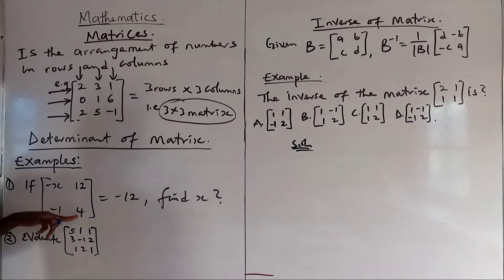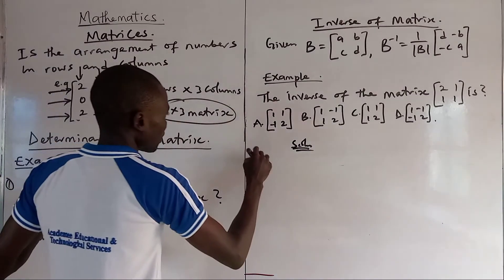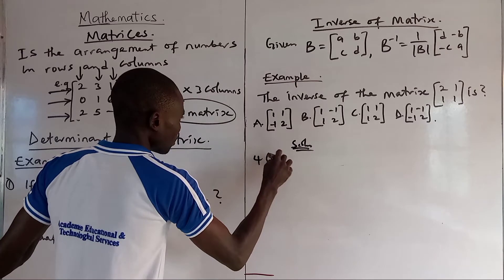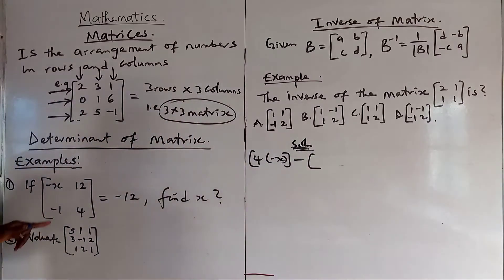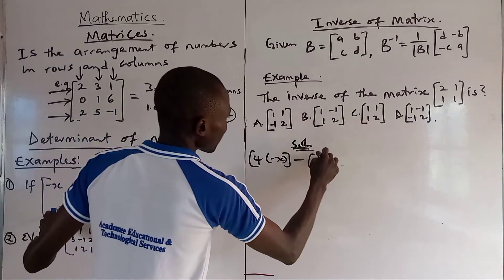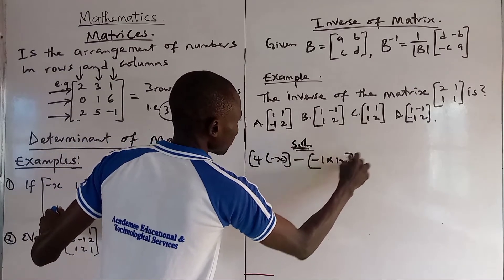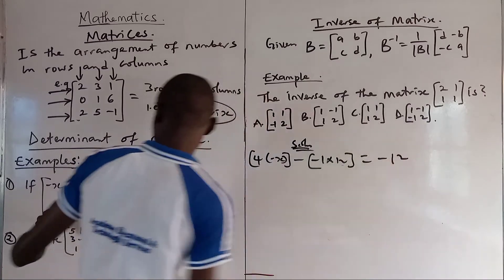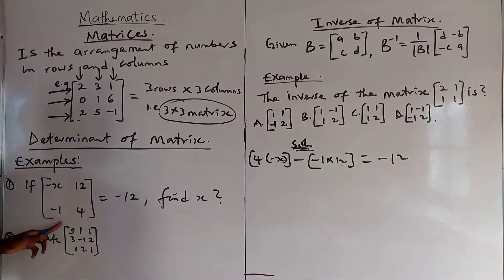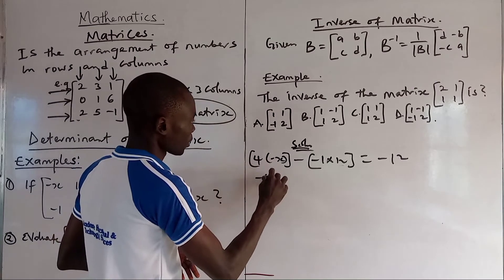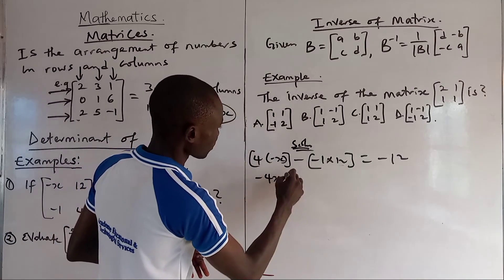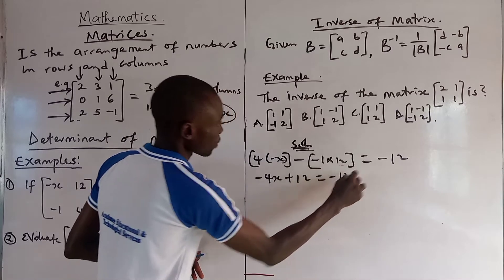Solution. In doing this, we say 4 times minus x, minus x times 4, minus the other side minus 1 times minus 1 times 12. Everything is equal to minus 12. That is the interpretation of this in order to find x. So 4 times minus x becomes minus 4x. This becomes plus 12 equals to minus 12.